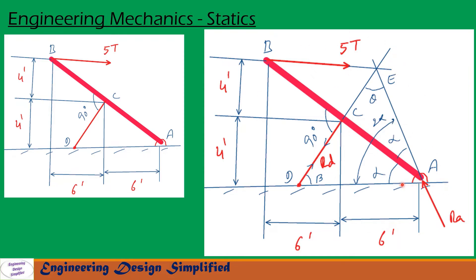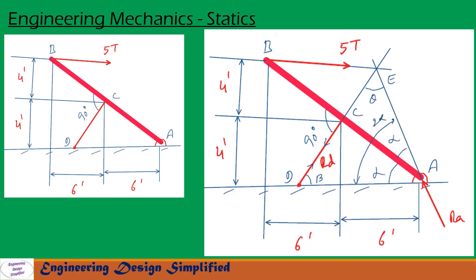If the angle between this bar and this foundation is alpha, and this is 4 feet, this is also 4 feet, the angle between this bar and this line will also be alpha. The total angle between AE and AD is 2 alpha. Let us call this angle between these two lines theta and angle between these two lines is beta.